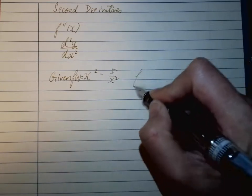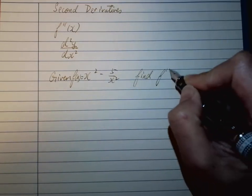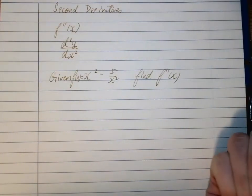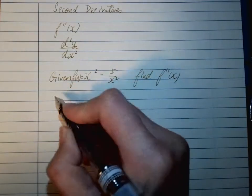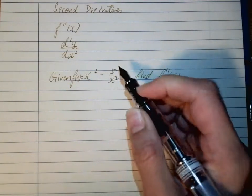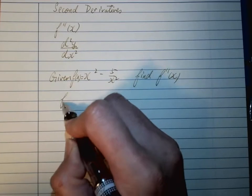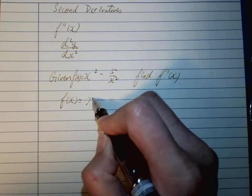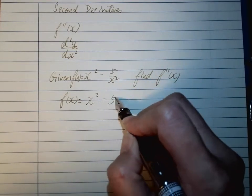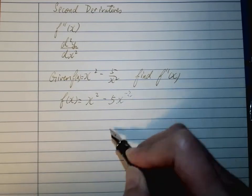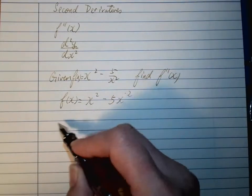All you need to do is differentiate it, but I do not like the denominator form. So what we're going to do is change it to a form we like. We have that become -5x^(-2). Now we all feel better.